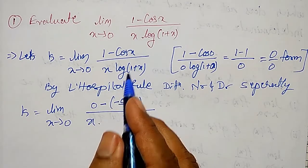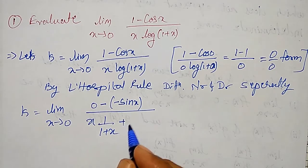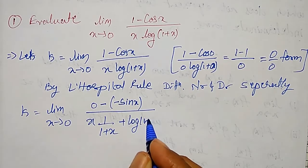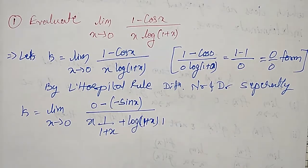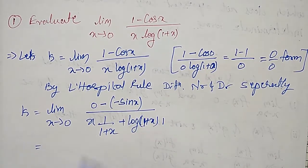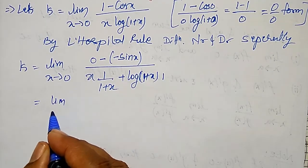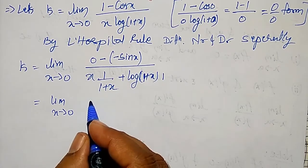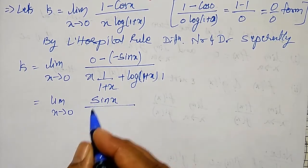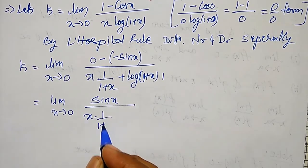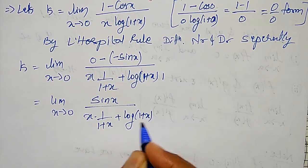So after applying L'Hôpital's rule, I can write this as the limit as x tends to 0 of minus sin x divided by x·(1/(1+x)) plus log(1+x).